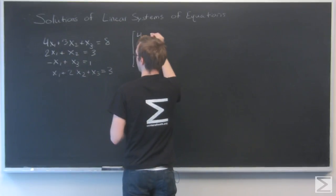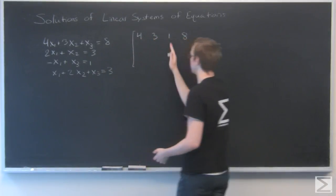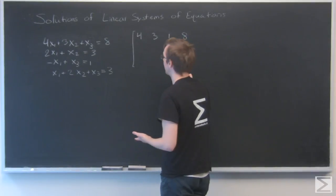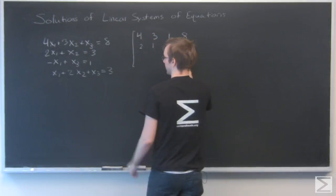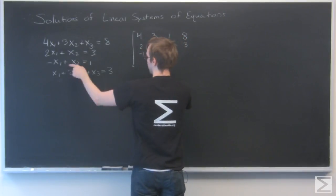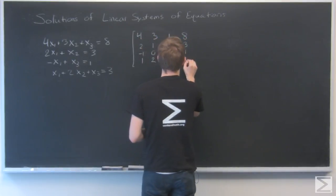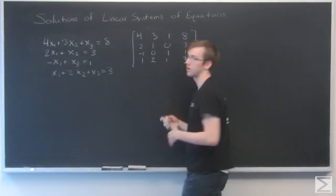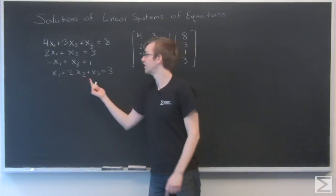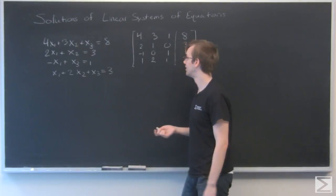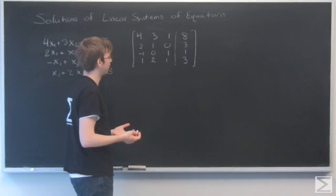My first row is going to be 4, 3, 1, 8. Be sure to watch this, because there's no x3 in this equation. But I still want to leave an x3 spot in my matrix for where it would go. But the constant would just be 0. So that's 2, 1, 0, and 3. That's minus 1, 0 for x2, 1 and 1. And that's 1, 2, 1, 3. A lot of the time what you'll see in a book is people will put a line right here. And that'll separate what we have on this side of the equation from the answers on this side.